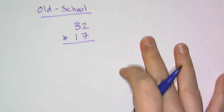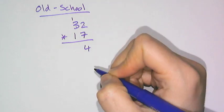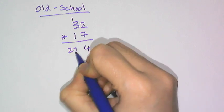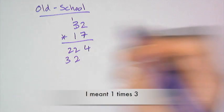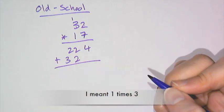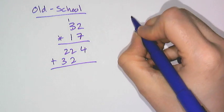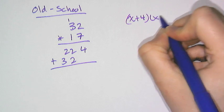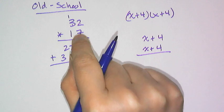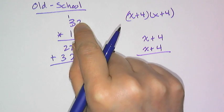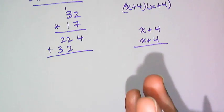You remember you have to do 7 times 2 and then 7 times 3, and then you had to move over a space and do 2 times 1 and then 2 times 3, and then you added them together. So what Leo asked was if you can do this setup with something that's like (x+4) times (x+4), because if you think about what this type of multiplication is, you're really distributing the 7 over the 32 and then this 10 over the 32. So it's literally the same thing.